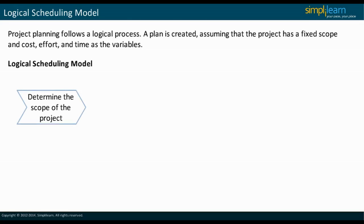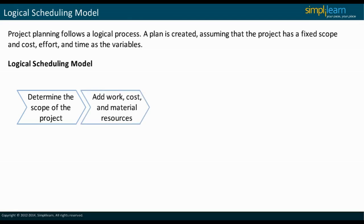First, determine the scope of the project by creating a list of tasks and subtasks to be performed. Then, add the work, cost, and material resources required to complete each task or subtask.